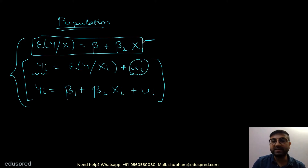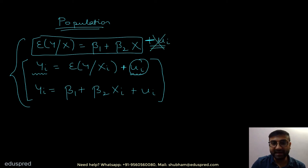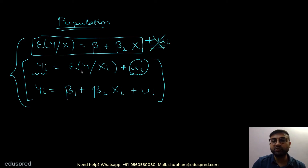In the first equation, you don't have to add the error term. Many students make this mistake — they write plus ui in the first equation. So in the first equation, do not write plus ui. But in the second equation, you do have to write plus ui.